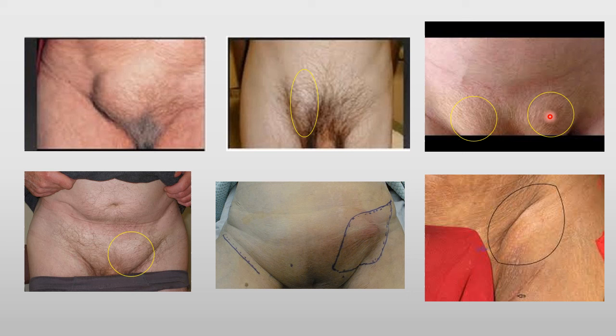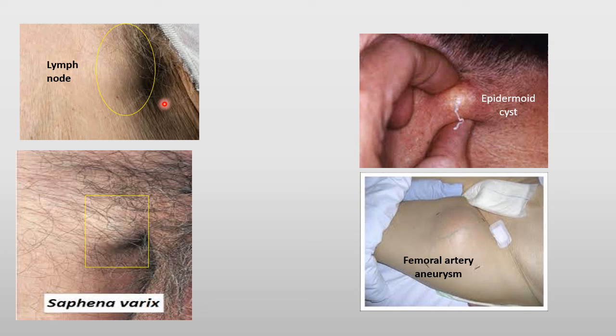These two lumps are bilateral inguinal hernias, which can be direct or indirect. This is a large swelling in the inguinal groin, which can be an inguinal hernia, a cyst, or even a femoral hernia. Here is a case of infected lymphadenitis in the inguinal region — swollen, tender, and red. This is another case of lymphadenitis that is not inflamed — a non-inflamed inguinal lymph node, which can be due to lymphadenitis or malignancy, either primary or secondary deposits.